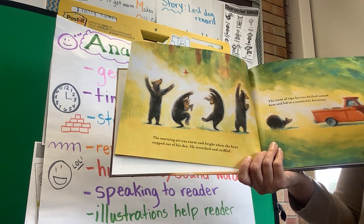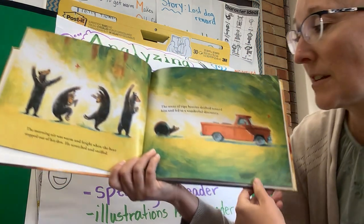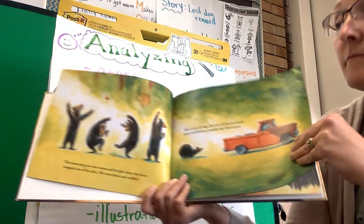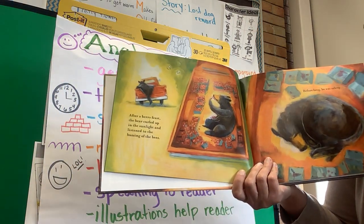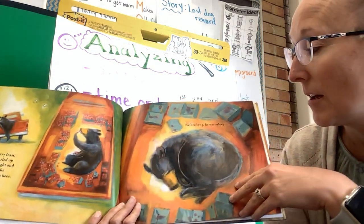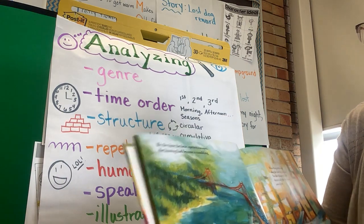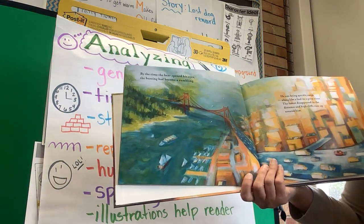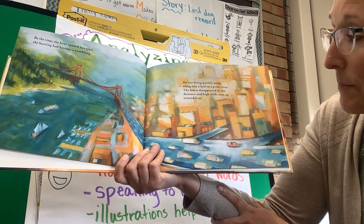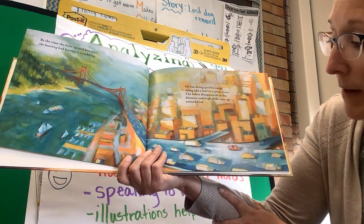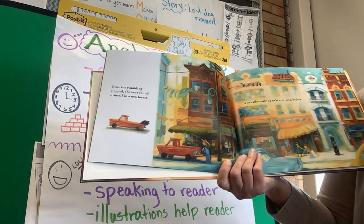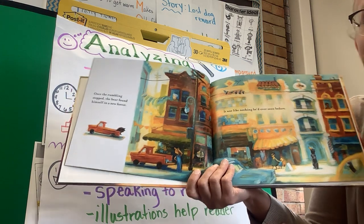'The morning air was warm and bright when the bear stepped out of his den. He stretched and sniffed — the scent of ripe berries drifted toward him and led to a wonderful discovery. After a berry feast, the bear curled up in the sunlight and listened to the buzzing of the trees. Before long he was asleep. By the time the bear opened his eyes, the buzzing had become a rumbling. He was being quickly swept along like a leaf in a great river — the forest disappeared in the distance and high cliffs rose around him. Once the rumbling stopped, the bear found himself in a new forest. It was nothing like he'd ever seen before.'